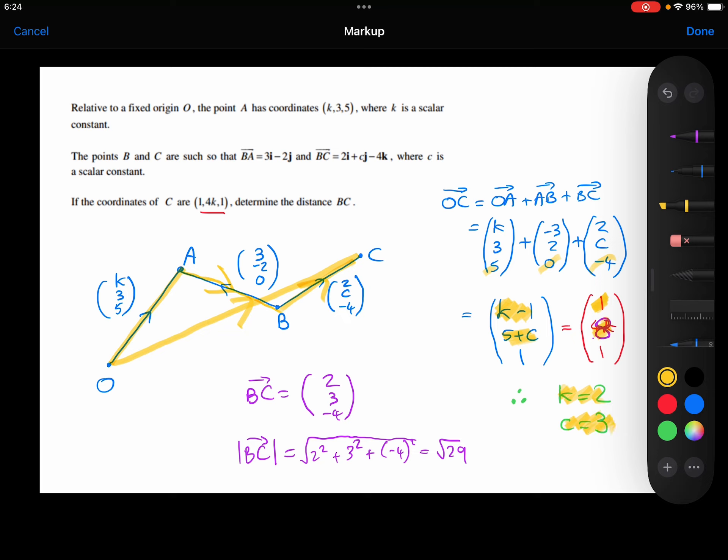And now I know that c is 3, I can put that here into my BC vector. Because the question is asking us to work out the distance BC, so the magnitude of BC. And so now I've worked out the magnitude of that vector, which is root 29.